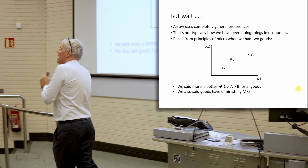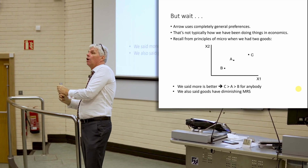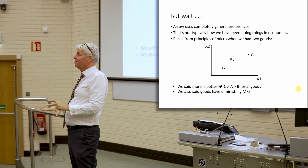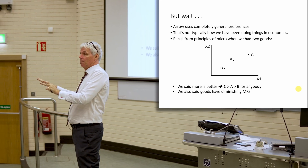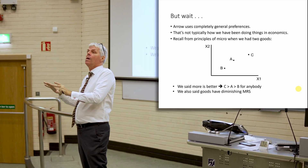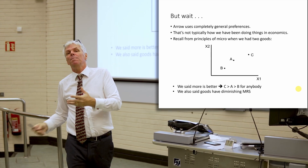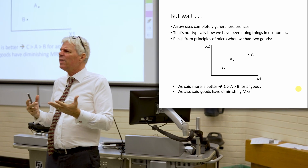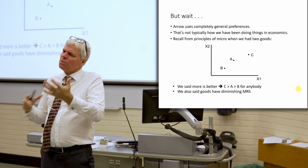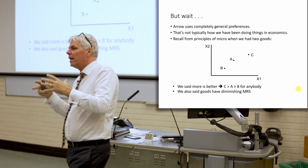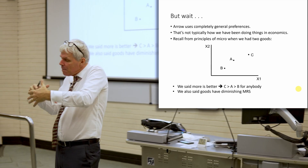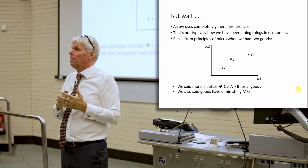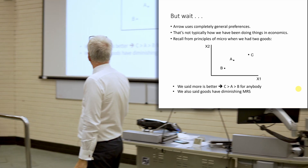Maybe if we started thinking more about what people are voting over and the kind of preferences that are reasonable in that situation, maybe that's going to eliminate a lot of the stuff that Arrow's worried about. So the first line of attack on the Condorcet Paradox was: maybe we can have a better voting system and that will solve the problem. That's not true — it's sad, but it's not true. The second line of attack is to think, well, maybe we've been posing this too generally.